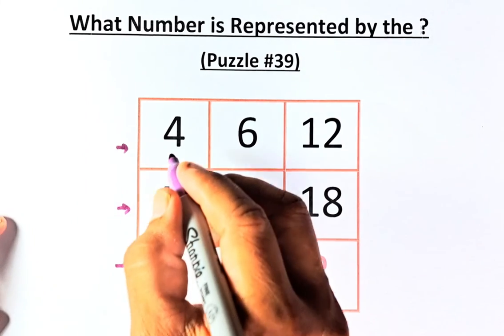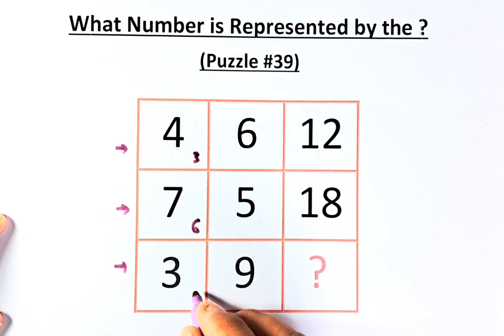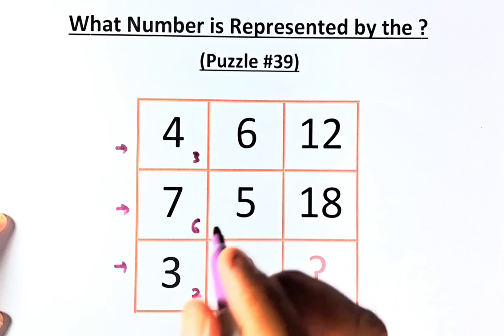Let's work it out. 4 minus 1 is going to be 3. 7 minus 1 is going to be 6. And 3 minus 1 is going to be 2. In the second column, you minus 2.